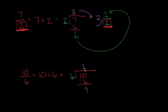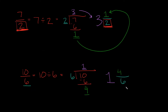And then 10 minus 6 is 4. We have all our parts to construct our mixed number. We're going to start with our big number, which is always this top number right here, so this 1 is going to be our big number. Our remainder is going to go on top, and whatever we had in the denominator here is the same thing we're going to put in the denominator here.